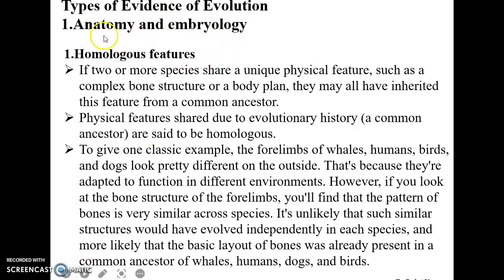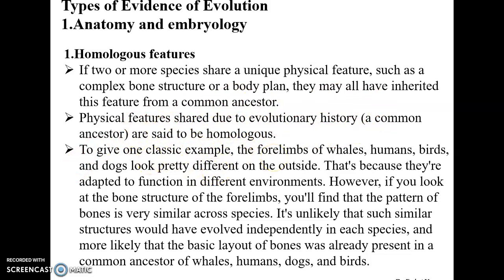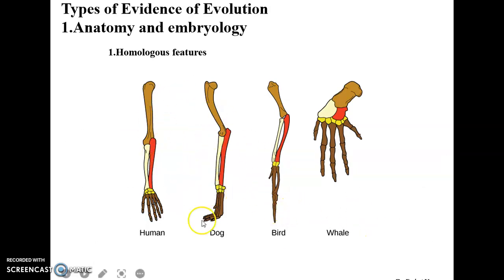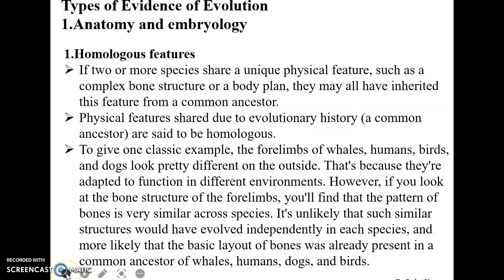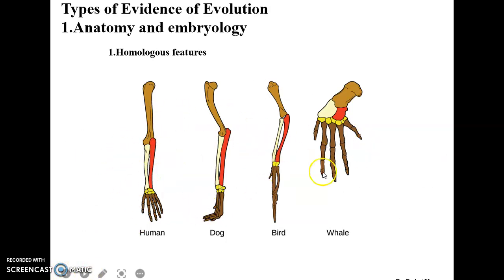In anatomy and embryology, we first discuss homologous features. If two or more species share a unique physical feature such as a complex bone structure or body plan, they may have common inheritance from a common ancestor. Physical features shared due to evolutionary history are known as homologous structures. A classical example is the four limbs of humans, dogs, birds, and whales. They may look different from the outside because they are adapted to different functions, but their underlying bone structures look very similar. These homologous features indicate common ancestry.